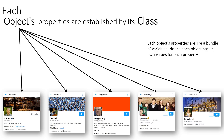The importance of a class is that it establishes the properties that each object is going to have. Because each of these Twitter profiles is of type TwitterProfile, they're going to have the exact same properties — the exact same bundled variables — as each other.